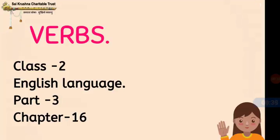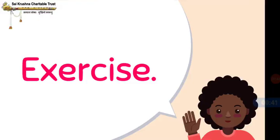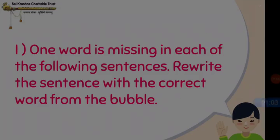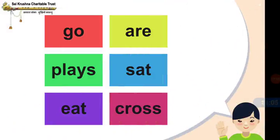In this part let us have the exercise. First main, we have one word is missing in each of the following sentences. We have to rewrite the sentence with the correct word from the bubble. I will show you the clue here. The clues are go, are, place, sat, eat, cross.